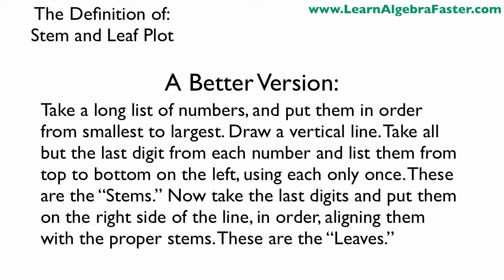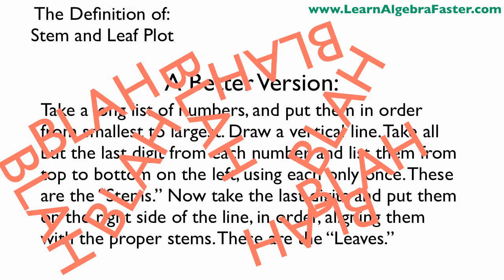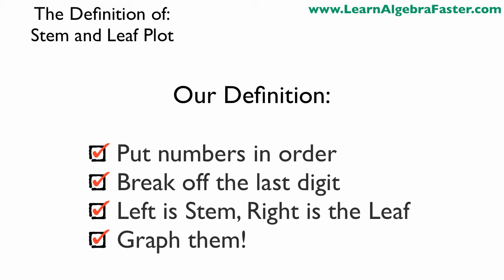So here's a little better version. This is something maybe your teacher or professor might say. You take a long list of numbers, put them in order from smallest to largest, draw a vertical line, take all but the last digit from each number and list them from top to bottom on the left using each of them only once - these are the stems. Now take the last digits and put them on the right side of the line in order, aligning them with the proper stems - these are the leaves. Once again, it's not very useful.